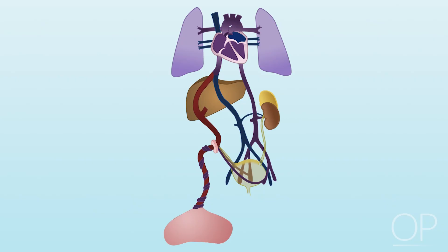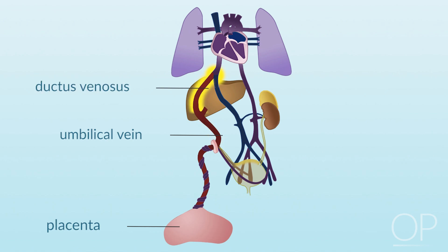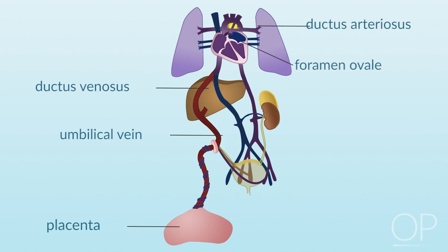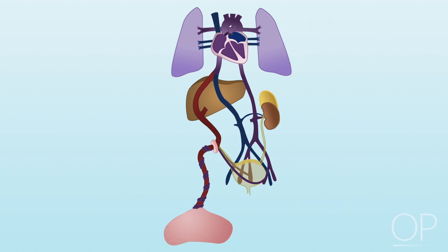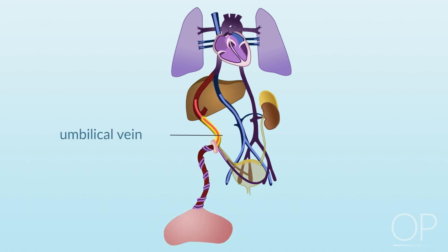The specific structures associated with fetal circulation include the placenta, the umbilical vein, the ductus venosus, the foramen ovale, the ductus arteriosus, and the umbilical arteries.